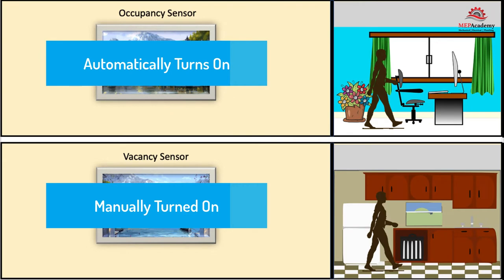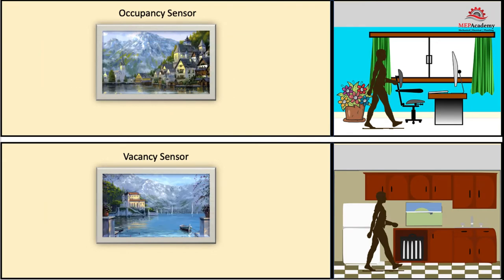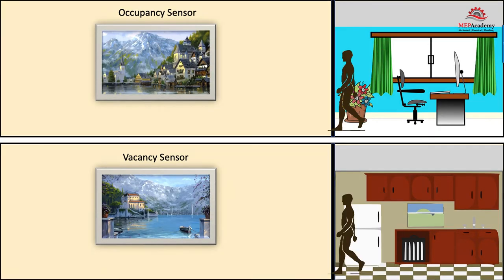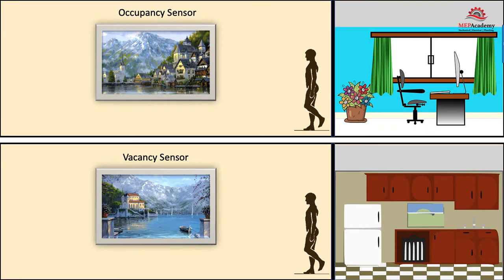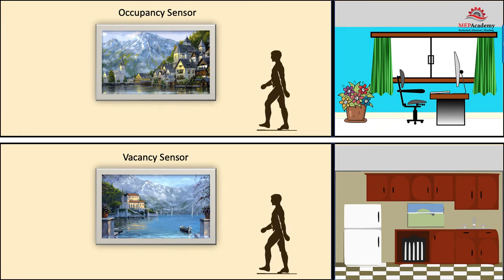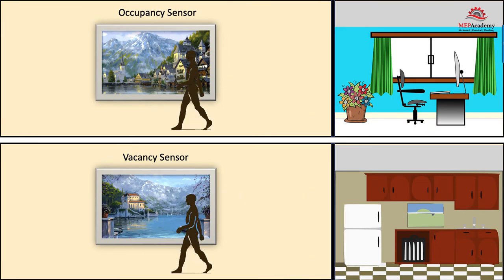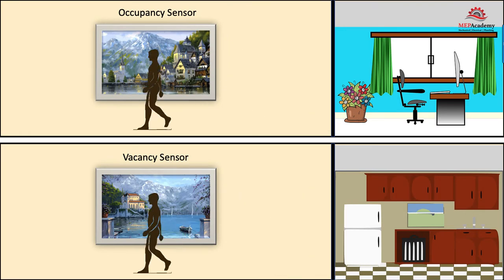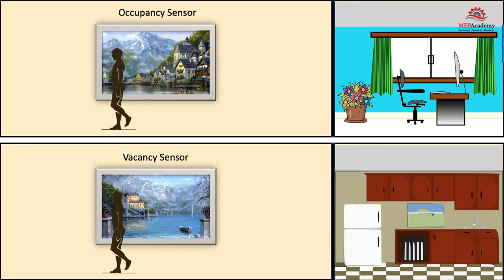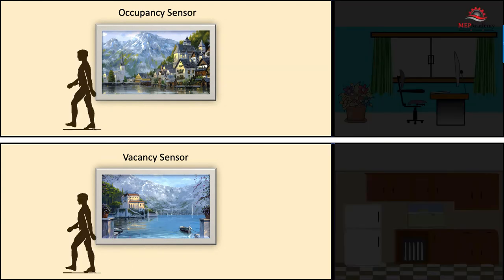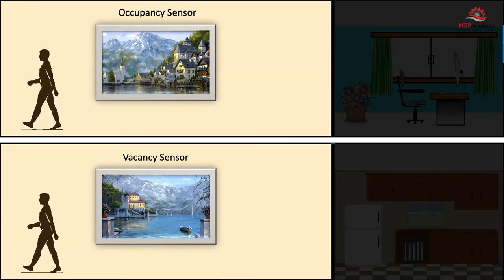An occupancy sensor and a vacancy sensor respond the same way when a person leaves the space unoccupied. After a preset time period, both technologies will automatically shut off the lights if the space is empty.